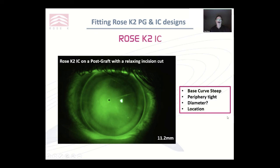IC on a post-graft with a relaxing incision cut. What do you think of it? The base curve is a bit steep, the periphery is definitely tight — there's that little black band we talked about earlier. When you see that, you know you've got to increase it. Diameter is good, location is good. So all you're going to have to do is go about 0.2 flatter centrally and open up that periphery.